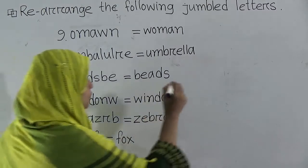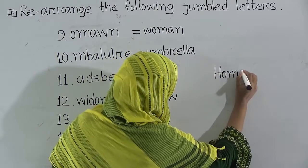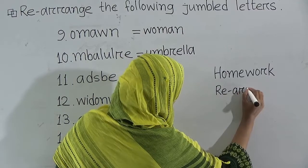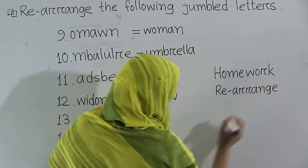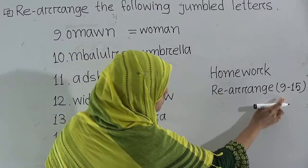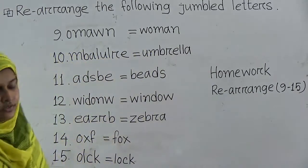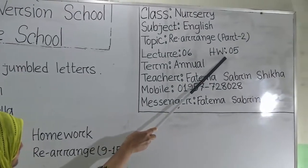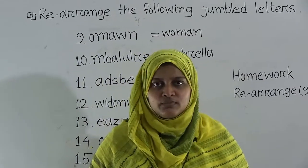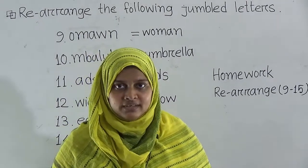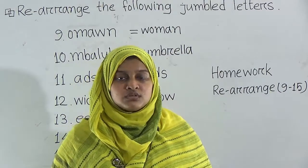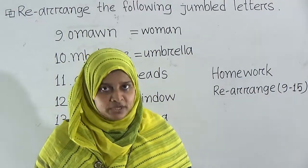Now students, I am giving your homework. Your homework will be Rearrange Part 2 from 9 to 15. Don't forget to write the lecture number and homework number at the top corner of your copy. Do your homework in your SW copy. You have to submit your homework every Sunday — guardians or anyone else can submit and collect copies on Sunday. Submit your SW copies because you will get your CT and SPA marks based on the submission of your SW copies.